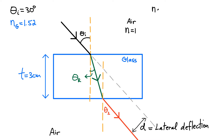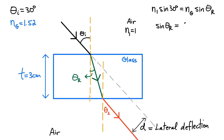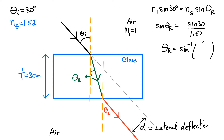Snell's Law for the top surface looks like this: N1 sine of 30 degrees is going to be equal to N of the glass, NG, multiplied by sine of theta R — that's the angle with respect to the normal. So I can go ahead and solve for theta R. We simply have theta R equals the inverse sine of sine of 30 degrees divided by 1.52. Sine of 30 degrees is 0.5, divided by 1.52. Plug that in your calculator and you get a refracted angle of approximately 19.2 degrees.